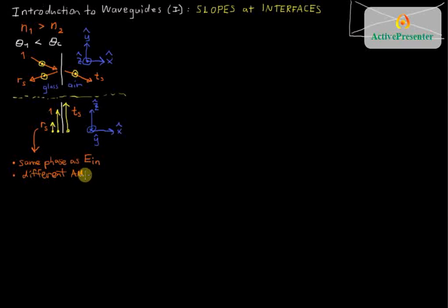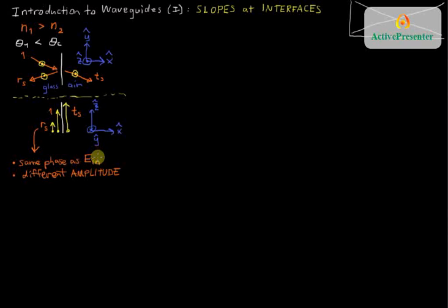This is going to be the opposite of what we find when there's total internal reflection, where the phase will be different but the amplitude is the same. For now we have same phase, different amplitude. As the angle changes, the reflection coefficient gets larger as the incident angle increases — as we come in at more steep angles, we get a larger and larger reflection coefficient.